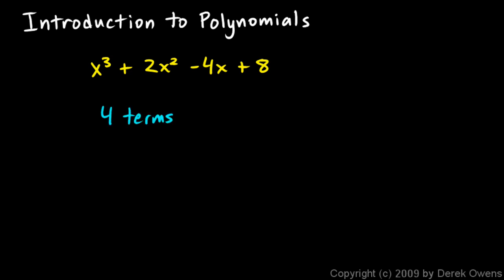This polynomial has four terms, and the four terms are x cubed, 2x squared, negative 4x, and 8. Don't forget that this negative sign is part of this term right here.